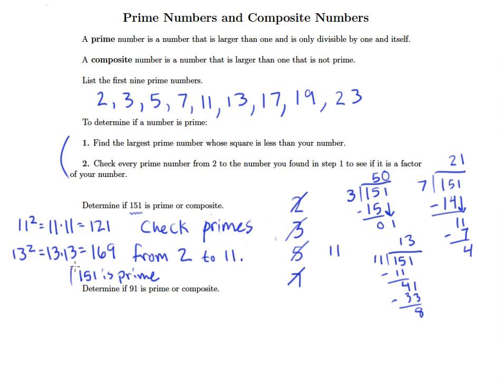For our second example of 91, we know that 11 squared is 121 - that's too big. 7 squared is 49, which is below 91. So all we have to do is check 2, 3, 5, and 7. If all these fail, 91 is prime. Of course, 2 does not go into 91 evenly because this is an odd number.